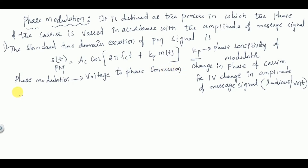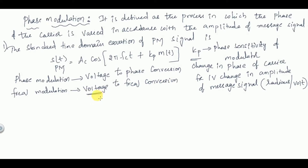Frequency modulation is voltage-to-frequency conversion — the amplitude of the message signal is converted into the frequency of the carrier. Phase modulation is voltage-to-phase conversion.